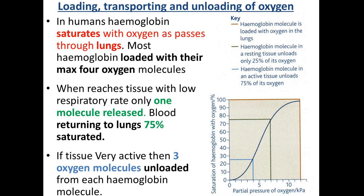When we are respiring very rapidly and are very active, three of the four oxygen molecules get unloaded at the tissues. The hemoglobin picks up four at the lungs, delivers three to the tissues, and returns to the lungs only 25% saturated, with just one oxygen molecule remaining.